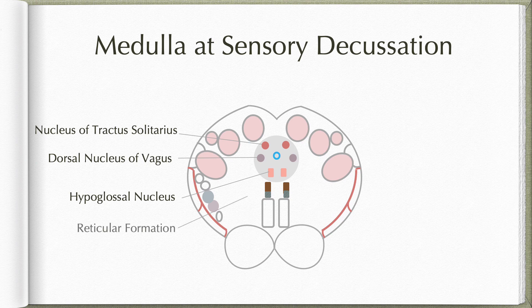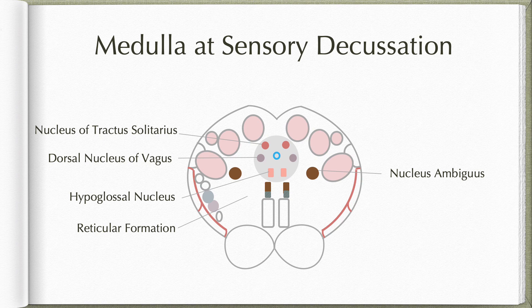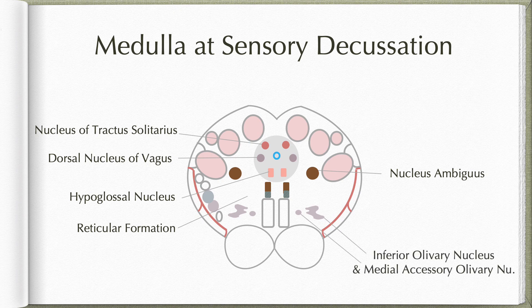The area outside the central gray matter is occupied by the reticular formation. Within this reticular formation, medial to the spinal nucleus of the trigeminal, we find the nucleus ambiguus. This belongs to the special visceral efferent column; its neurons supply the muscles which develop from the third, fourth, and sixth pharyngeal arches. Posterior to the pyramids, we also find the lower ends of the inferior olivary nucleus and medial accessory olivary nucleus, both part of the inferior olivary nuclear complex, which is better seen at a higher level.